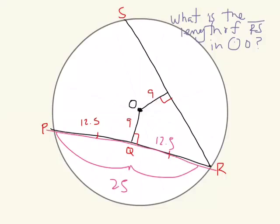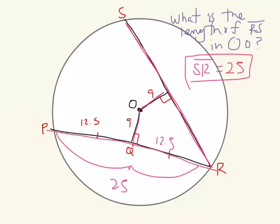PR is 25. And since these two chords are equidistant from the center, SR is also going to be 25. Simple as that. Let's move on.